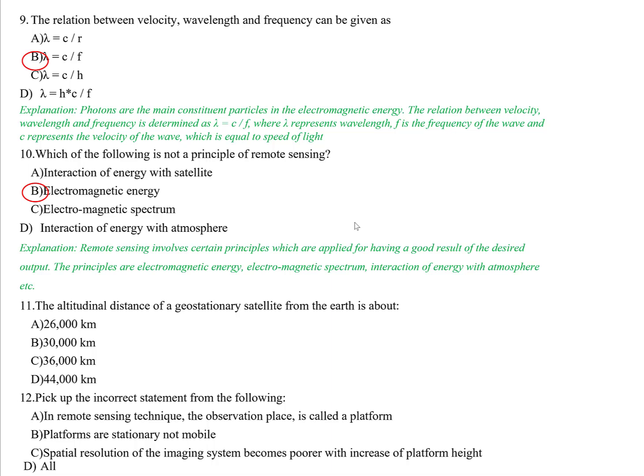Question eleven: The altitudinal distance of a geostationary satellite from Earth is about 36,000 kilometers from the Earth's surface. There are two types of satellites: geostationary satellites and sun-synchronous satellites.